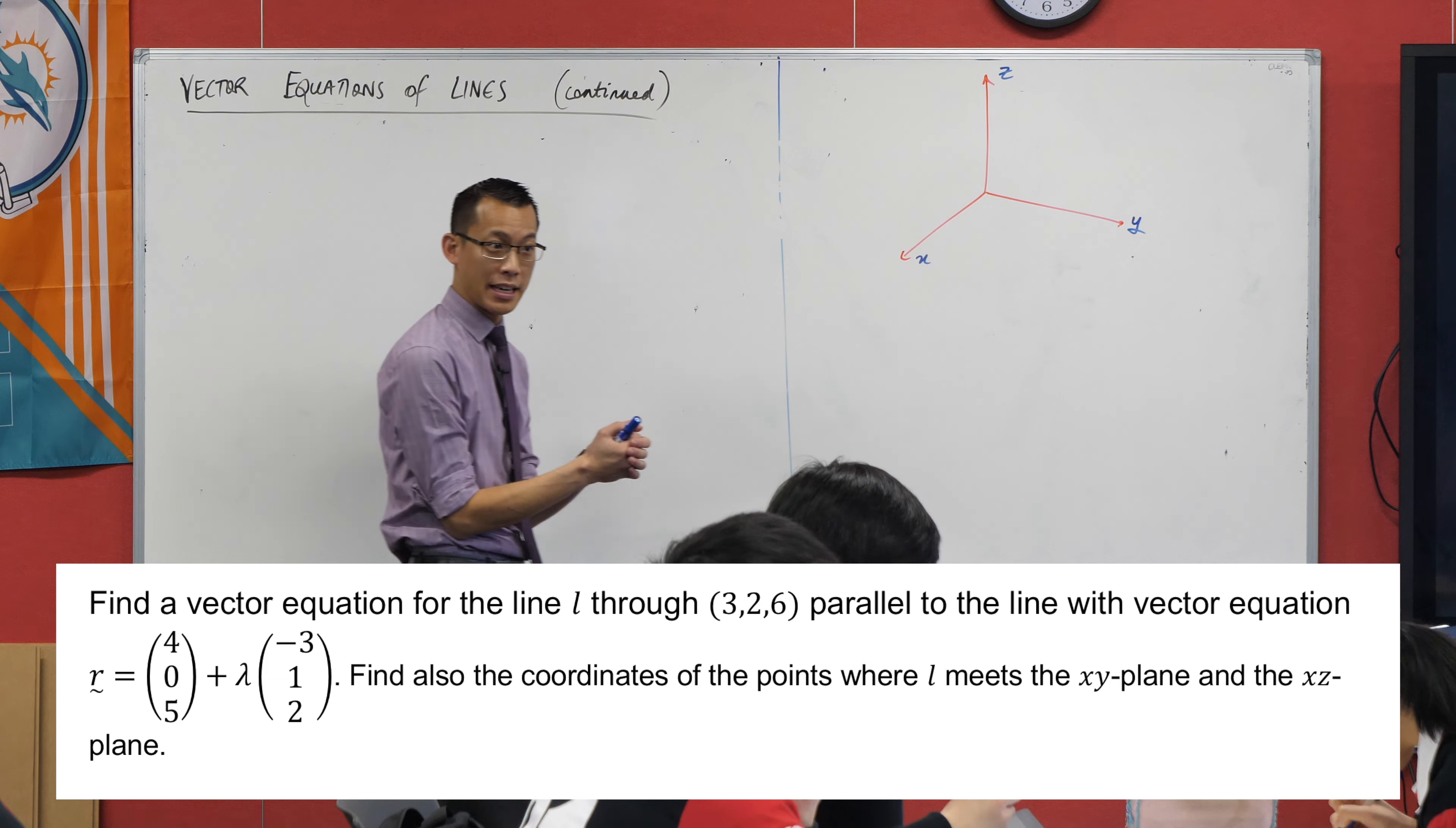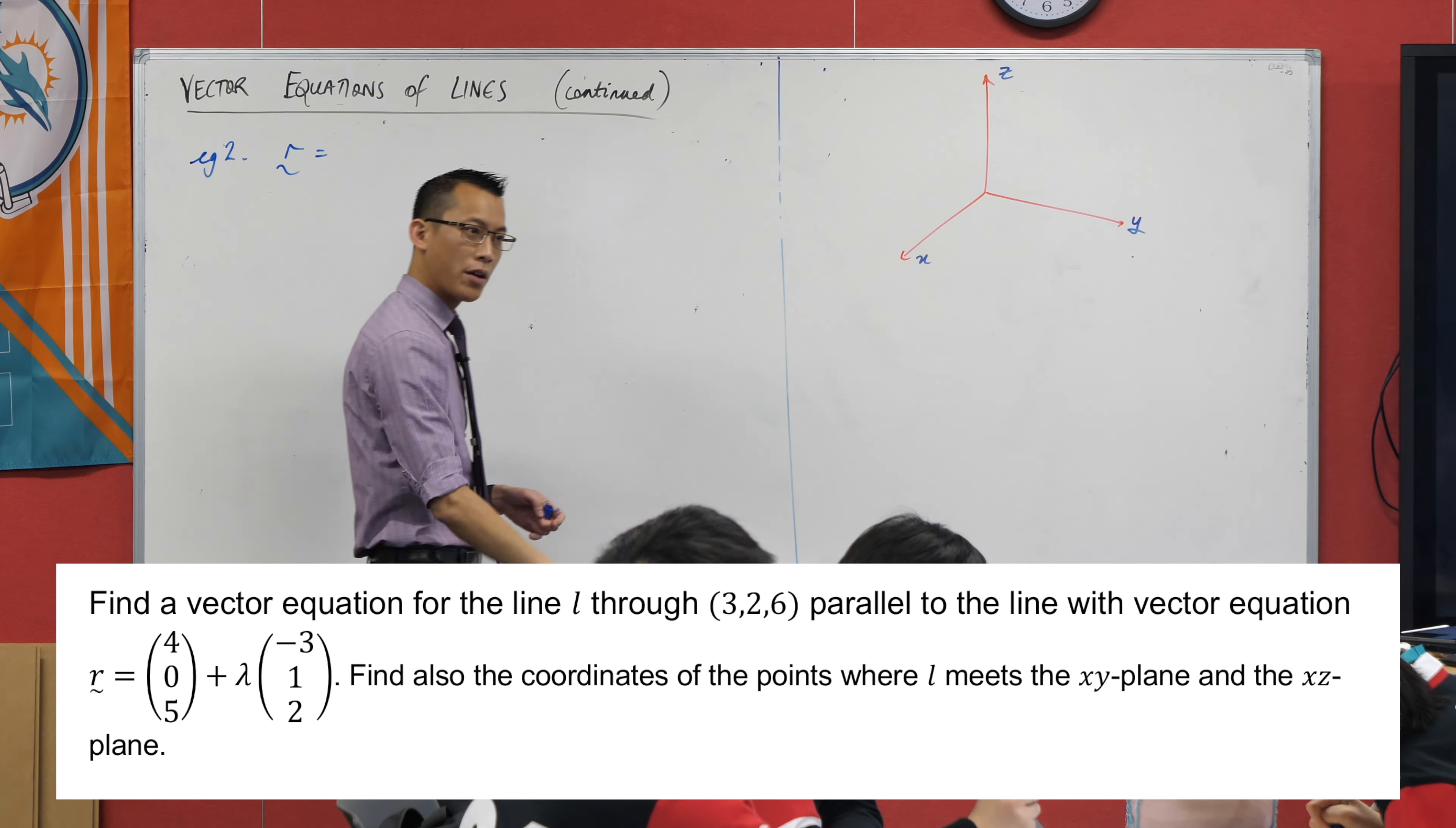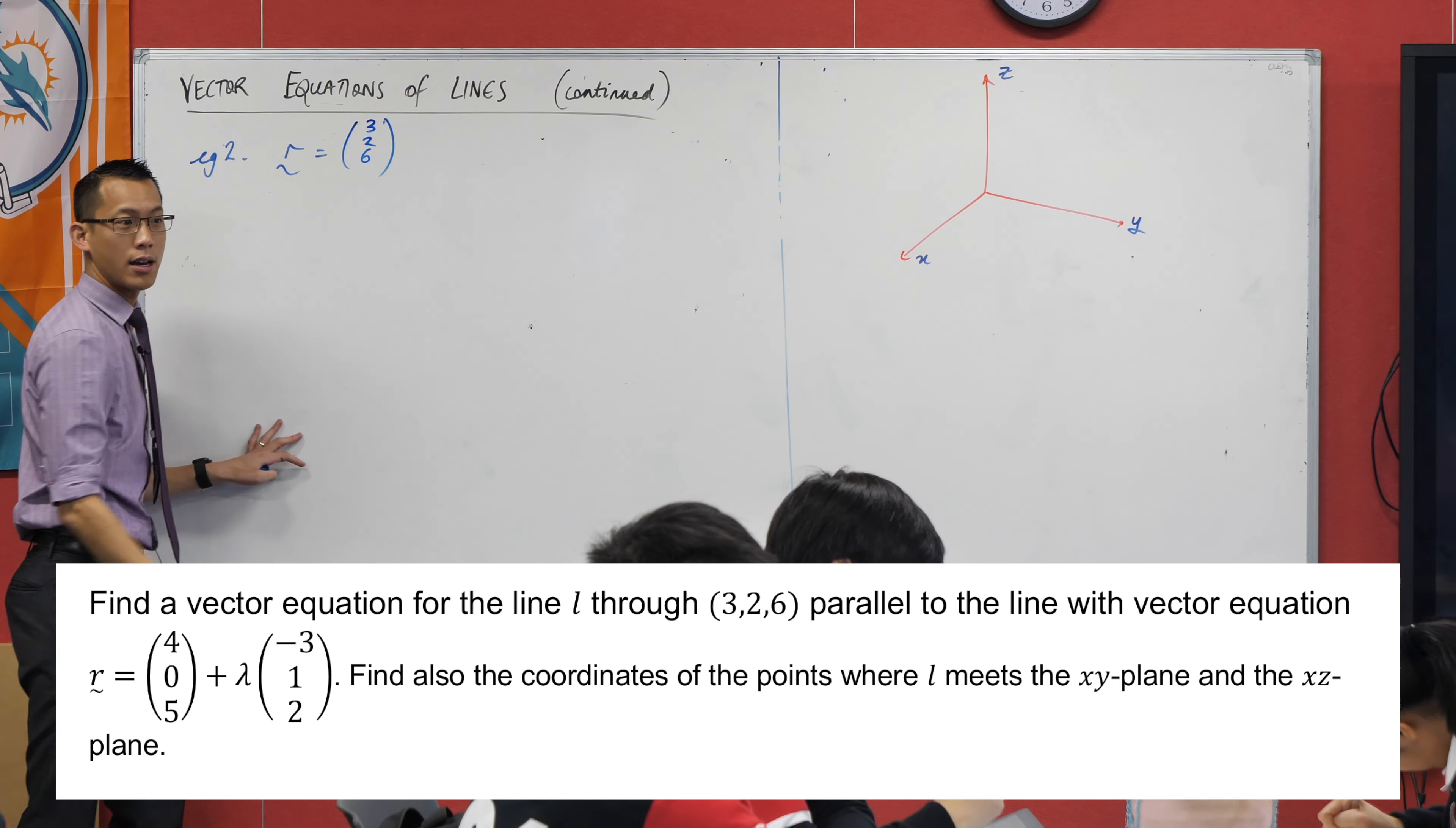Similar tasks that we have to begin with, but slightly different information. We need to begin by finding a vector equation of a line. We've got a point that the line L goes through, 3, 2, 6, and so immediately, that's actually, this is example 2. This is actually the first piece of information I want. That point that I go through, line L goes through 3, 2, 6, I'm on the line now.